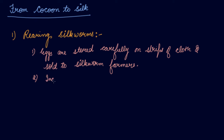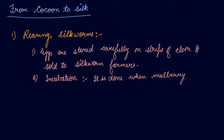The next step is incubation. The farmers keep the eggs under hygienic conditions of temperature and humidity. The eggs are warmed to a suitable temperature for the larva to hatch from the eggs. This is done when the mulberry trees bear a fresh crop of leaves — incubation is done when mulberry tree leaves bear a fresh crop of leaves.